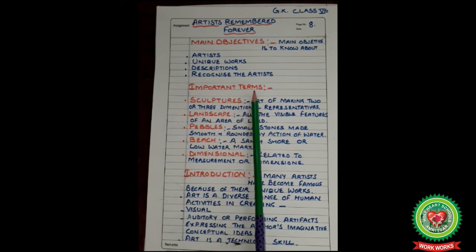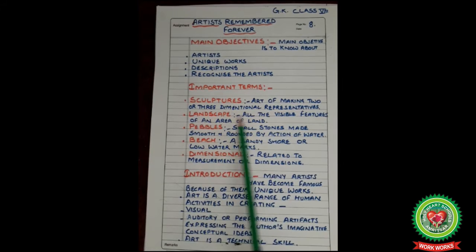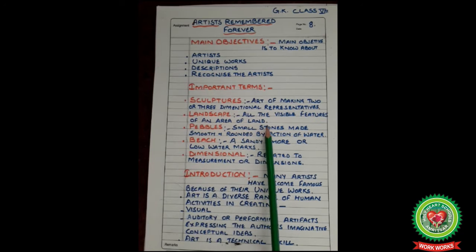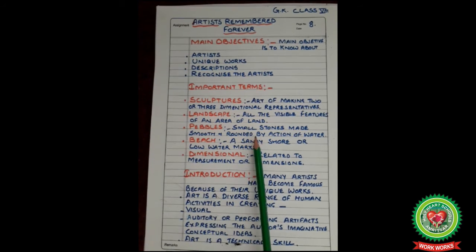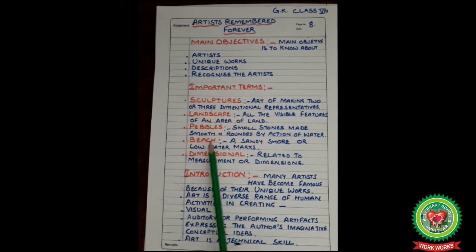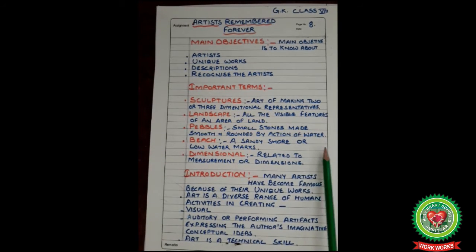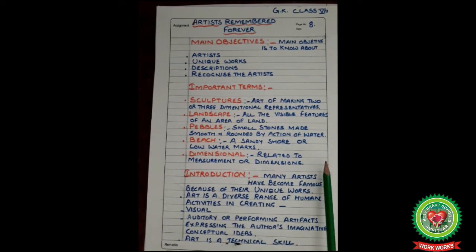Important terms: Sculpture — the art of making two or three dimensional representations. Landscape — all the visible features of an area of land. Pebbles — small stones made smooth and rounded by the action of water. Beach — a sandy shore or low water mark. Dimensional — related to measurement or dimensions.